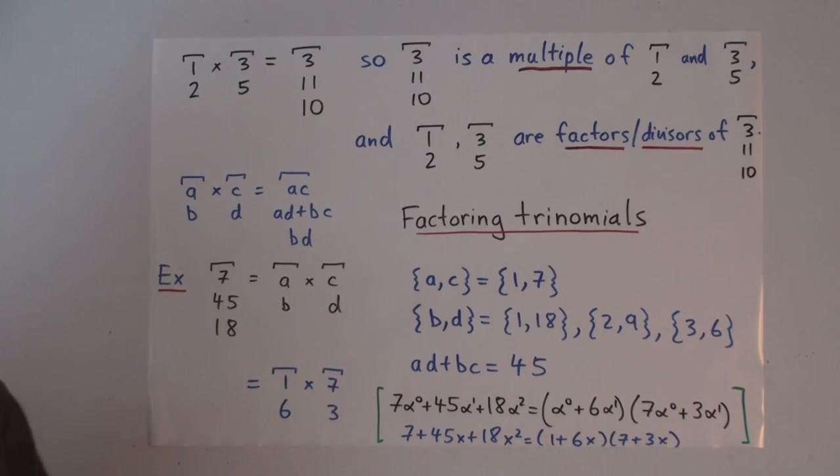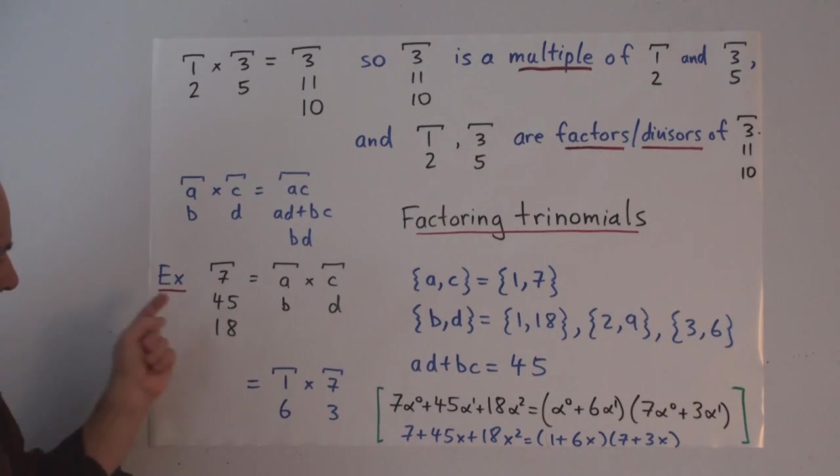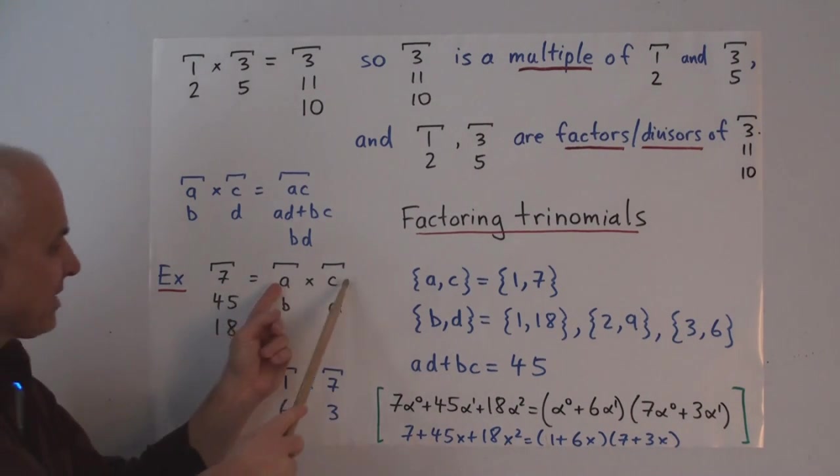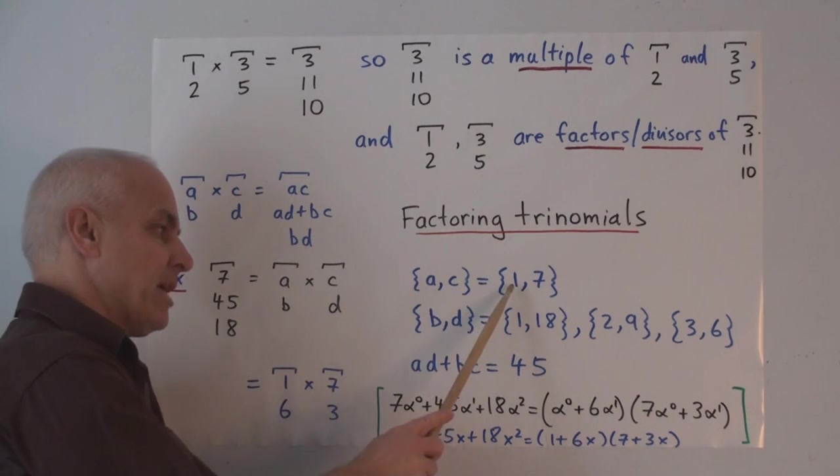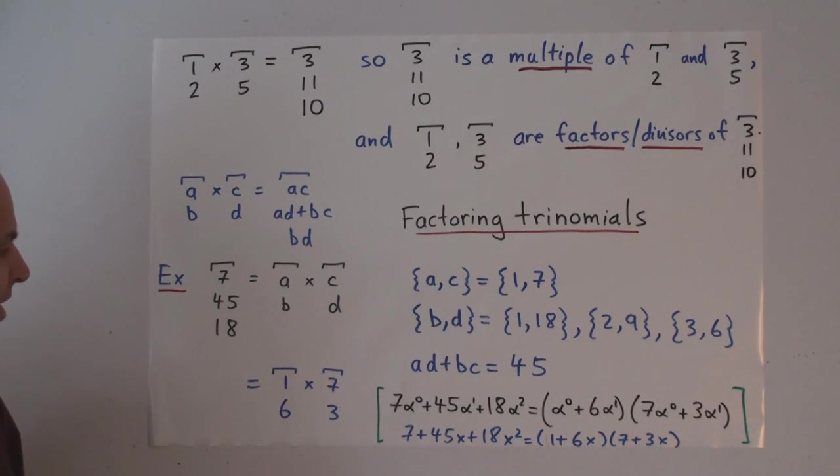So if we stare at this, this helps us solve this problem. For example, suppose you're given the trinomial 7,45,18. You want to write it as AB times CD for some AB and some CD. Well, then A times C has got to be 7. And these are natural numbers. A and C are either 1 and 7 or 7 and 1. In other words, the set AC has got to equal the set 1,7.